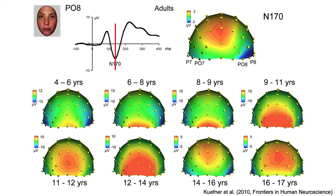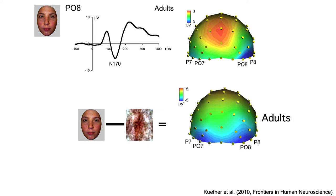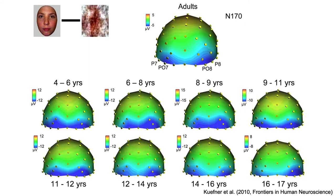To answer that question, Kufner et al. looked at the scalp distribution of the face minus scrambled face difference wave. The idea is that the ERP to faces contains all the same activity as the ERP to scrambled faces, plus face-specific activity. So the face minus scrambled face difference wave isolates the face-specific activity. In adults, the scalp distribution of the difference wave is quite different from the whole face ERP — much more focused over the lateral occipitotemporal areas where we'd expect to see face-specific processing. Here are the scalp distributions of the difference waves for all age groups: they're nearly identical. So once you isolate face-specific processing with a difference wave, you can see that the same brain regions are active for faces from four-year-olds through adults.